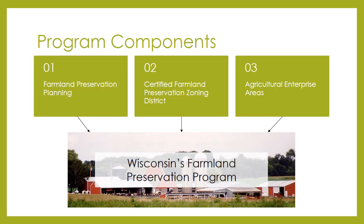The Farmland Preservation Program consists of three main components. The first component is farmland preservation planning. This foundational step of the program is where counties identify agricultural lands that will stay in agricultural use for the foreseeable future. It enables landowners and local officials to build up other components of the program.